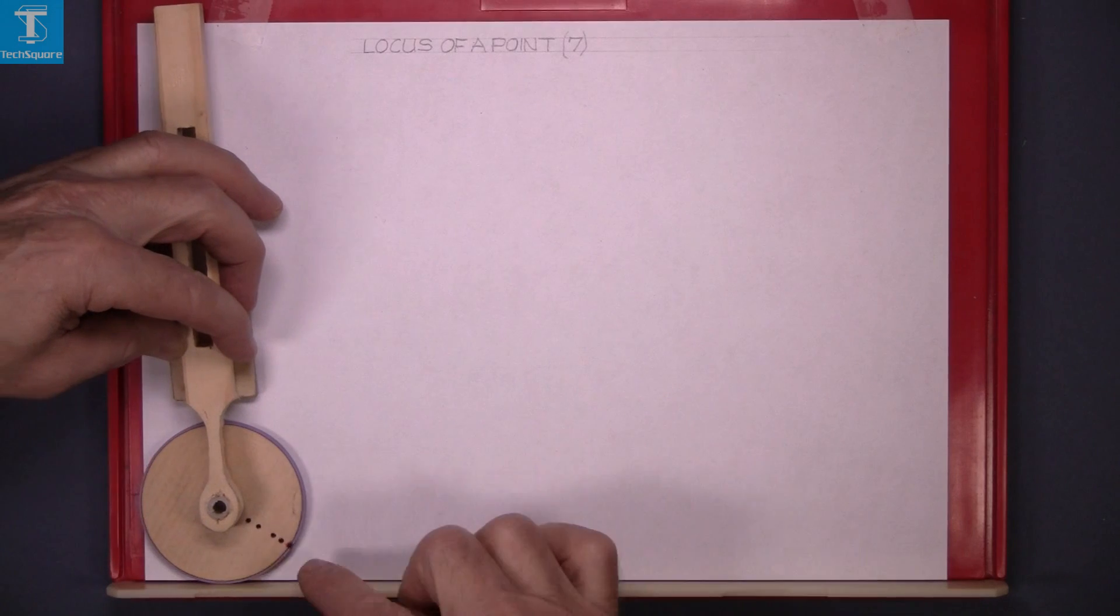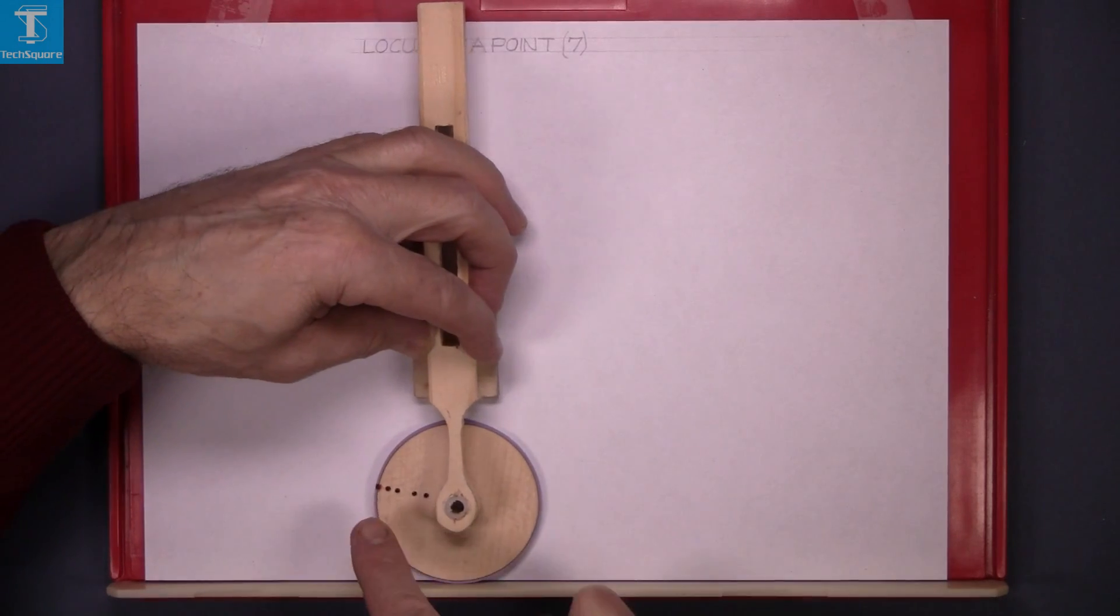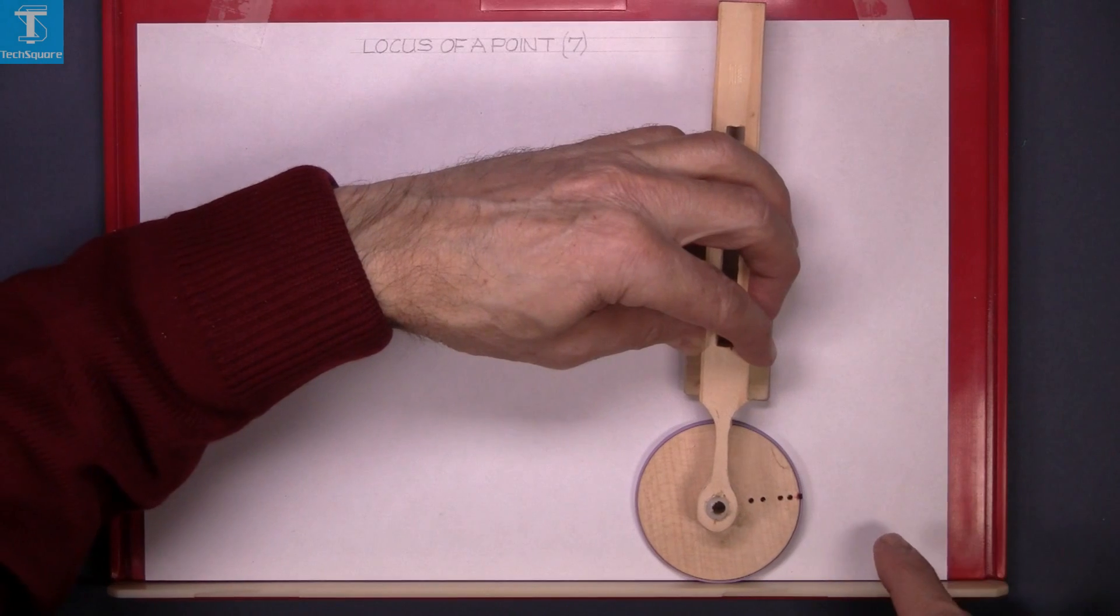What I want to do is roll the wheel along the guide rule and trace the path of this point as it rolls around.